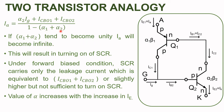If alpha1 plus alpha2 equals 1, the denominator of the IA equation becomes zero, and anything divided by zero is infinite. Hence, IA becomes infinite and the SCR turns on. Under forward biased conditions without any gate signal, the current carried by the SCR is only the leakage current equivalent to ICBO1 plus ICBO2, which is very small and not sufficient to latch the SCR into the ON state.